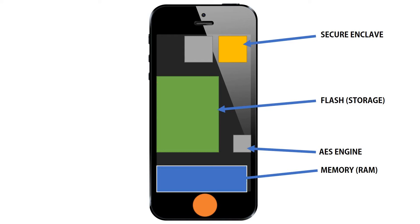By default, files that are stored in the flash — that means texts, photos, videos — they're all encrypted.